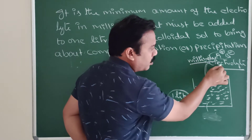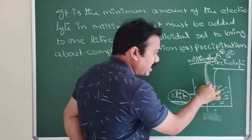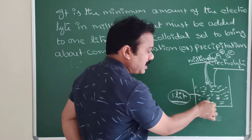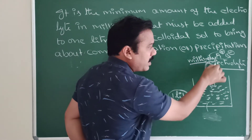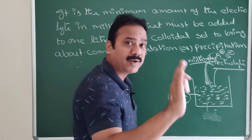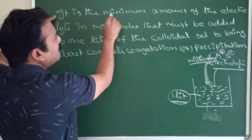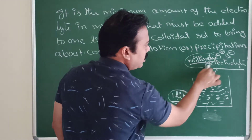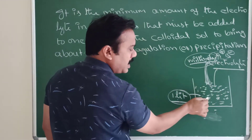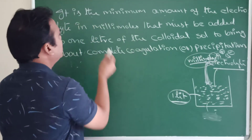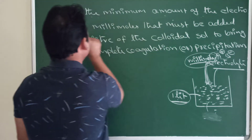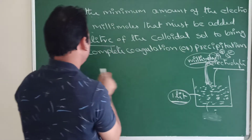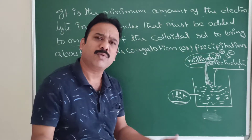The flocculation value is the minimum number of millimoles of electrolyte required to precipitate 1 liter of the colloidal sol. To completely precipitate 1 liter of a colloidal sol, the minimum amount of electrolyte in millimoles that must be added to bring about complete coagulation or precipitation — that is called the flocculation value.